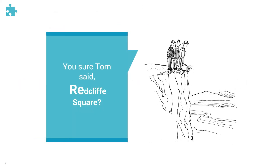In London, for instance, where this research took place, many street names and locations are separated by a single vowel. There are so many streets it's hard to keep an inventory. Redcliffe Square, R-E-D, and Radcliffe Square, R-A-D, is an example. If you don't know there's another street that sounds the same — and there's no reason to doubt whether you've heard the person properly — you may readily go to the wrong place.